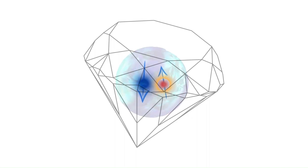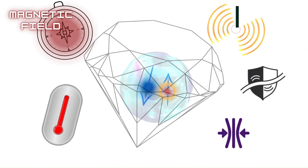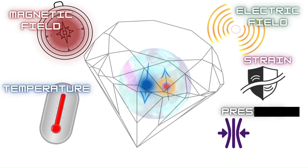NV defects may also be employed as sensitive probes for various physical parameters, including magnetic fields, electric fields, temperature, strain and pressure.